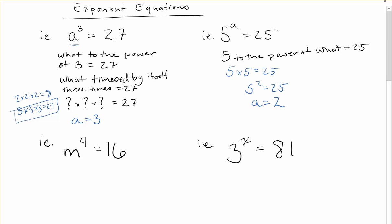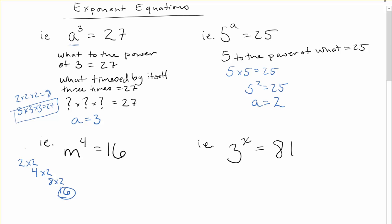If you're not sure, just keep multiplying to see if you get to the right answer. Going back to the first type where the base is the unknown: what times itself four times equals 16? Trial and error is probably the way to go. Starting at 2: 2 × 2 = 4, × 2 = 8, × 2 = 16.